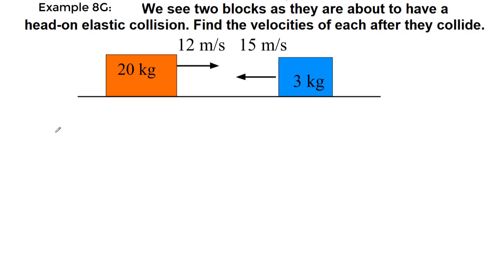The idea behind elastic collisions is that we are able to figure out two different unknowns — the two final velocities of a collision that's about to happen — instead of either having the blocks stick together with a single final unknown velocity, or being given one of the final velocities and finding the other. This gives us two separate unknowns, which means we need two separate equations.